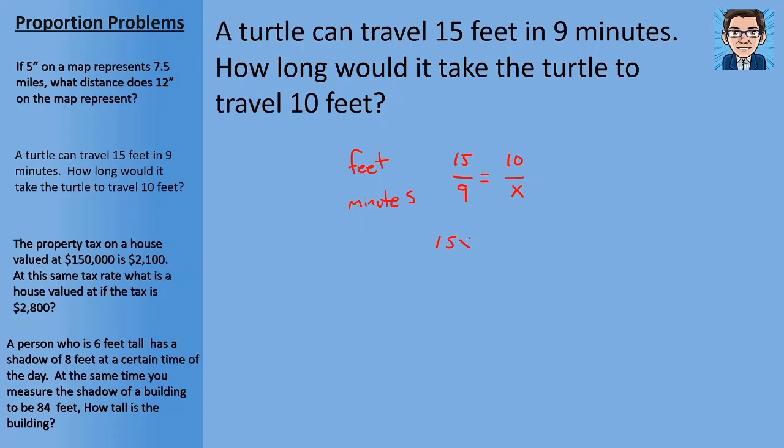So 15x. 15 times x equals 9 times 10 or 90. Divide both sides by 15 and we get x equals 6. So it would take him 6 minutes to travel 10 feet.